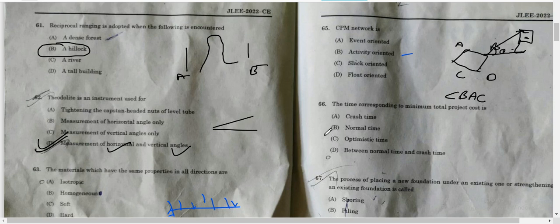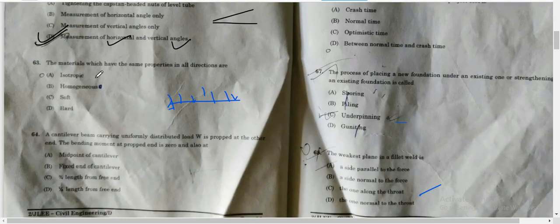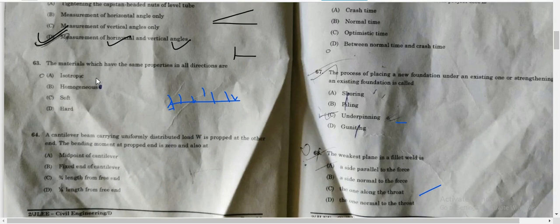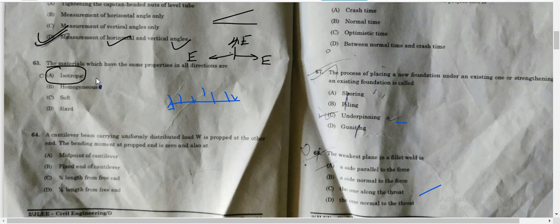Next, question number 63. The material which have the same properties in all directions - same properties in X direction, same property in Y direction, also same property in Z direction - those materials we call isotropic materials. Homogeneous is a material where properties do not depend on direction. Homogeneous is a property which is not a function of position, it does not depend on directions. If it's direction dependent, then we say isotropic. So the correct answer is option A.